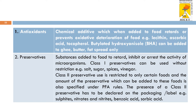Antioxidants are chemical additives which are added to prevent the oxidative deterioration of any food product. Examples include lecithin, ascorbic acid, and tocopherol. These antioxidants prevent oxidative deterioration in foods such as ghee, butter, and fat spreads.